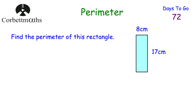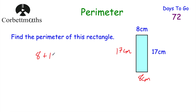The perimeter of a shape is the distance around the outside of it. Find the perimeter of this rectangle — feel free to press pause and work it out. To find the perimeter, we write down the missing sides: if the top is 8 cm, the base is 8 cm; if the right side is 17 cm, the left is 17 cm. So 8 + 17 + 8 + 17 = 50. The perimeter of this rectangle is 50 centimetres.